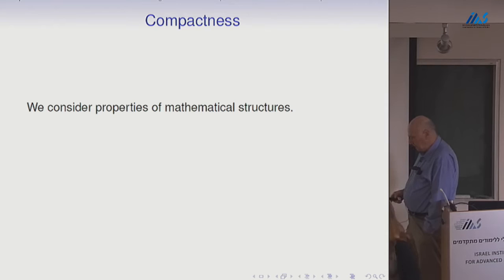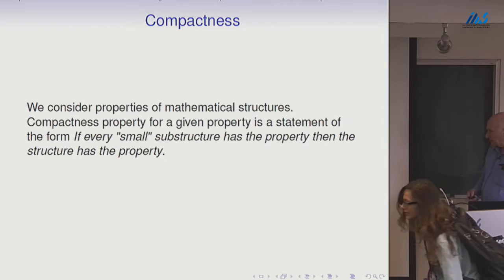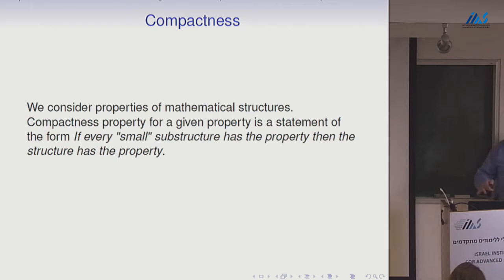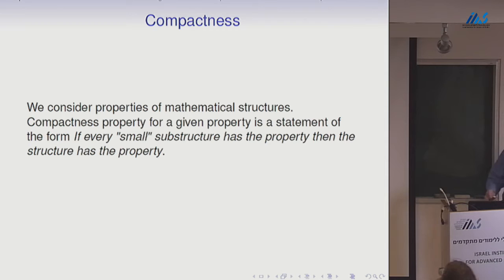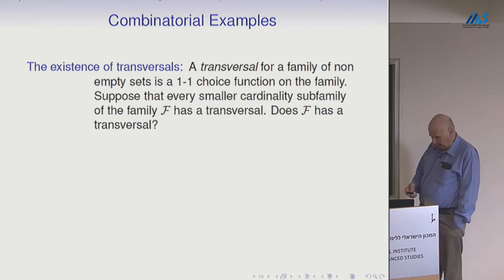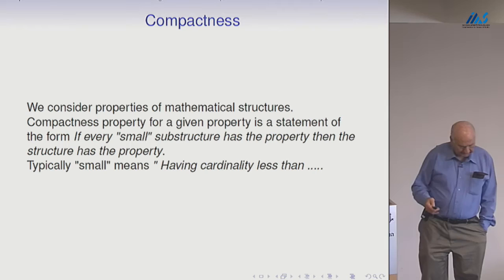Usually what we do, we consider some properties of mathematical structures — it could be a wide variety of properties. Compactness for a given property is a statement that allows you to infer from the fact that the property holds at every very small substructure that the property holds at the structure itself. In this tutorial, 'small' typically will mean having cardinality less than something.